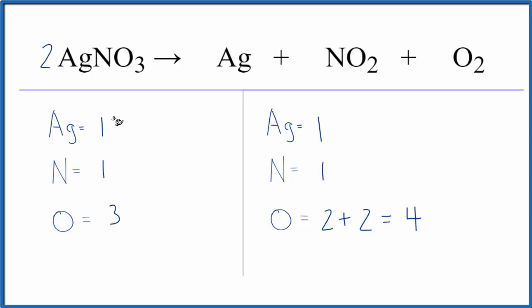So we have two times one, that gives us two silvers, we have the two times the one nitrogen, gives us two nitrogens, but two times the three oxygens, now we have six oxygens. So it's getting a little bit closer.